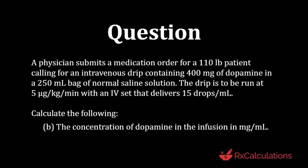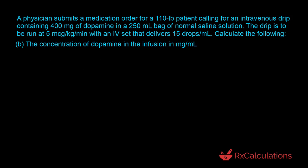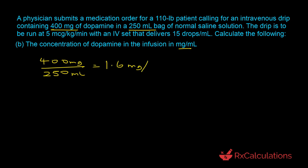For Part B, the question asks to calculate the concentration of dopamine in the infusion in milligrams per milliliter. We identify two quantities: the amount of dopamine — 400 milligrams — and the volume, which is the 250-milliliter bag. The concentration equals 400 milligrams divided by 250 milliliters, which equals 1.6 milligrams per milliliter.